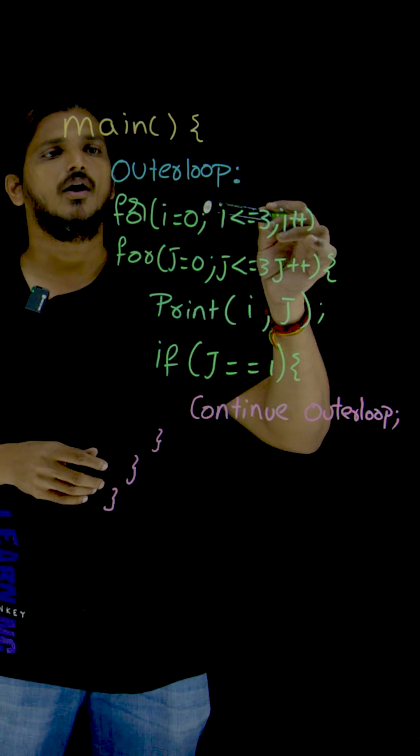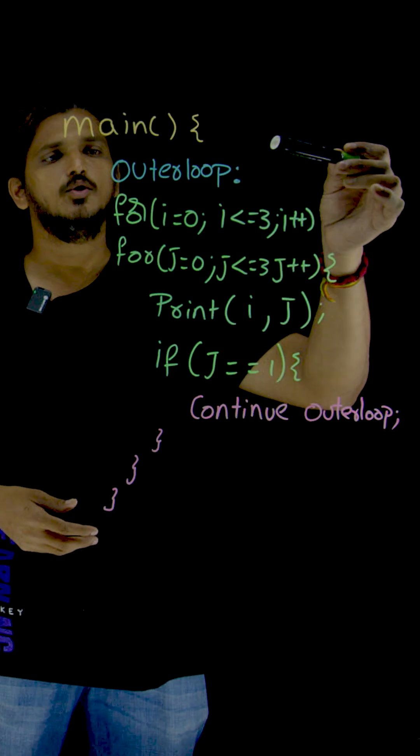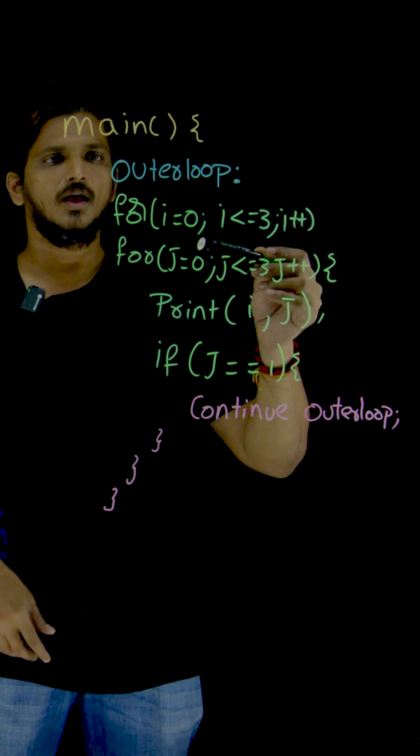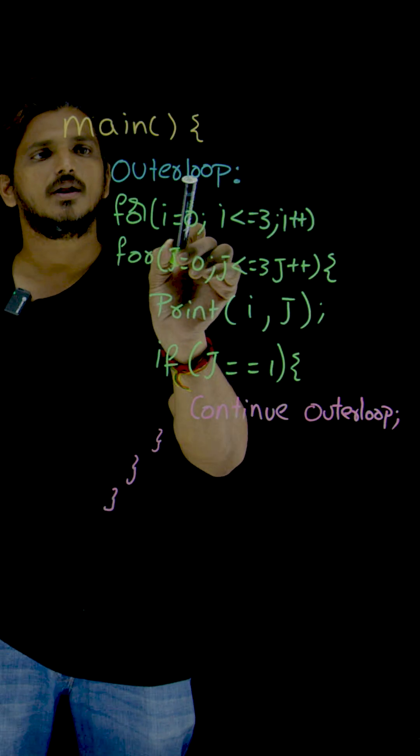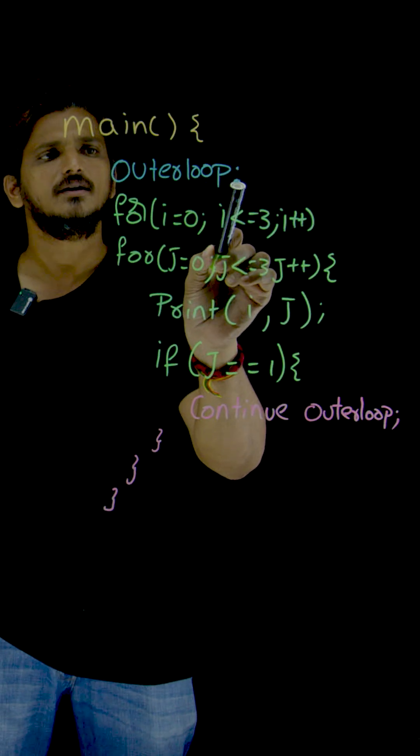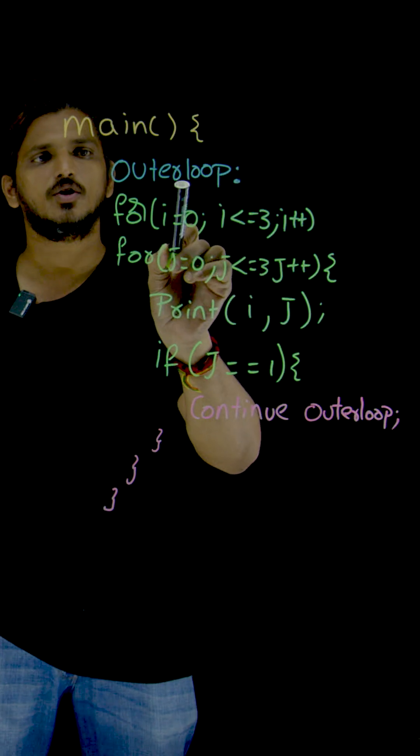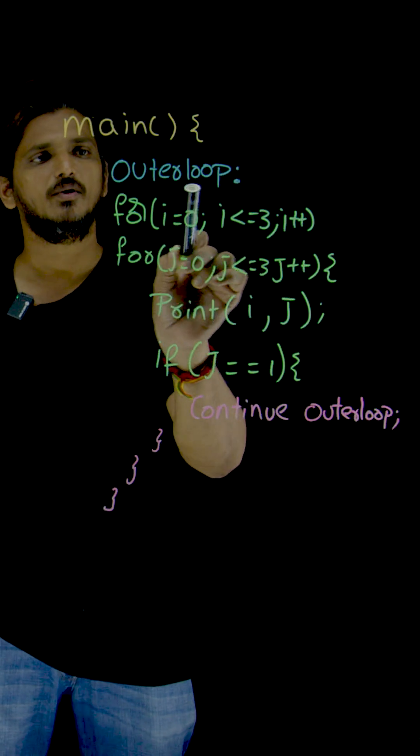Now coming to the first use of label in loops. In order to mention the label outer loop, this is a label and colon will be used. In order to mention it, the syntax for label will be like this.